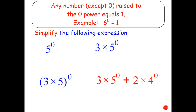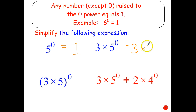Any number except zero to the zero power equals one, so these are actually quite easy. Five to the zero equals one. Three times five to the zero: we know five to the zero equals one, so three times five to the zero equals three. I'll leave you to try the last two — stop the video, have a go, then restart it and see how you went.